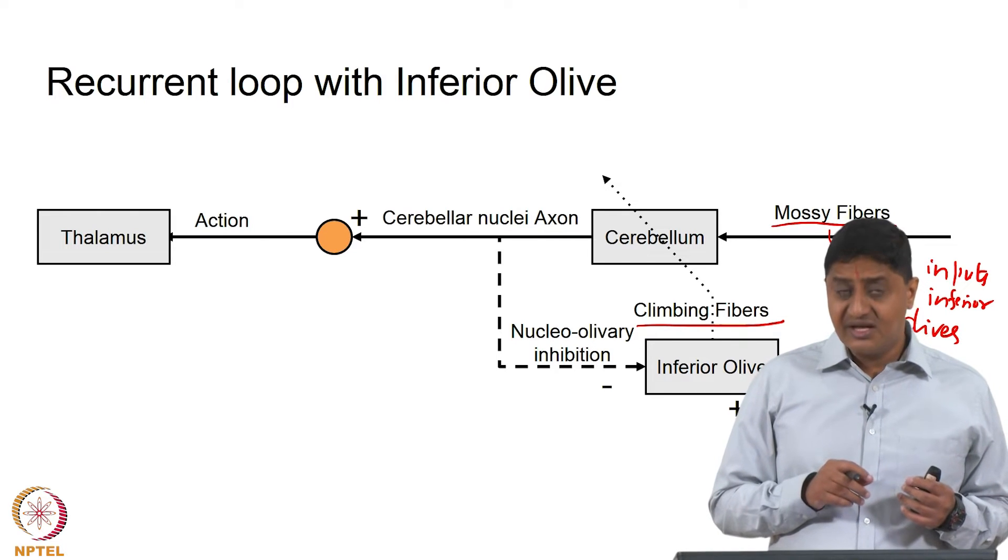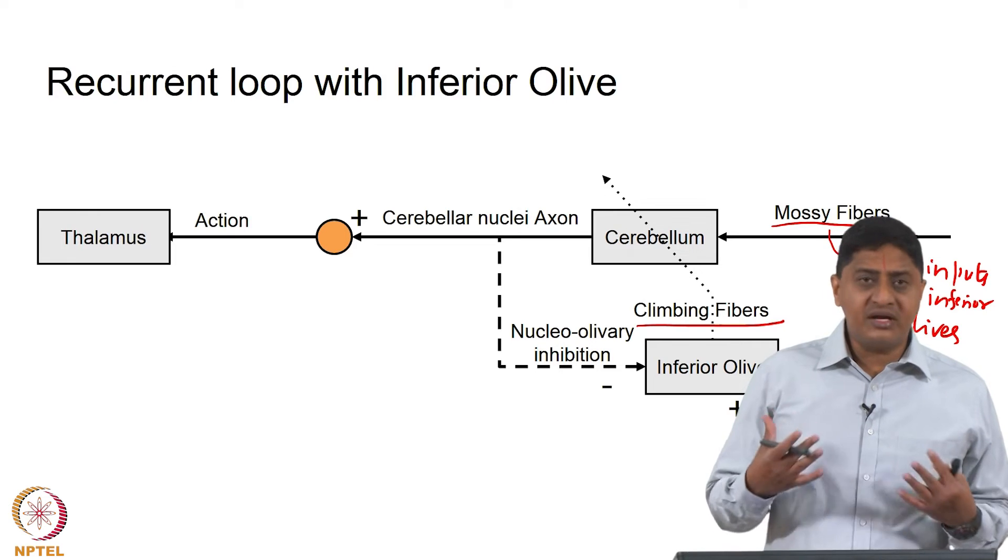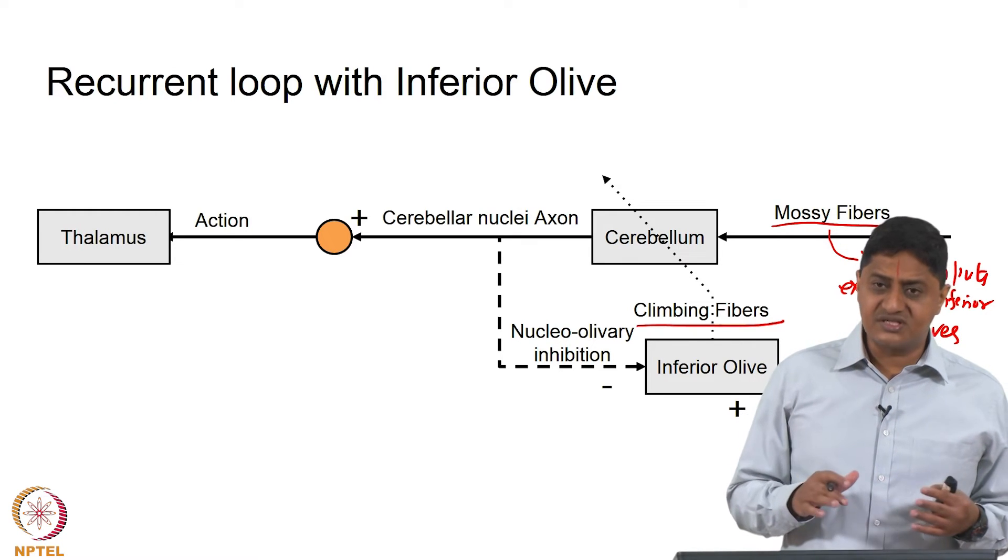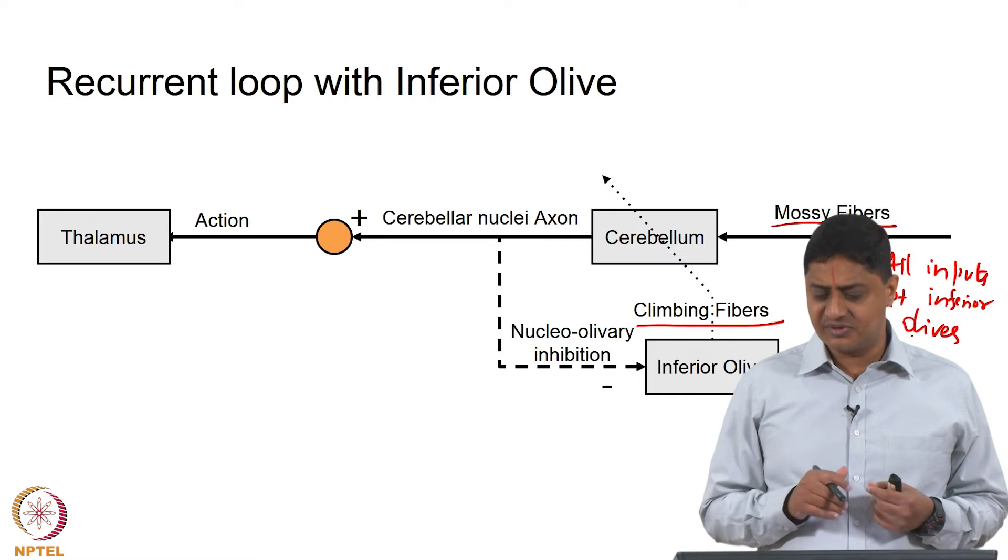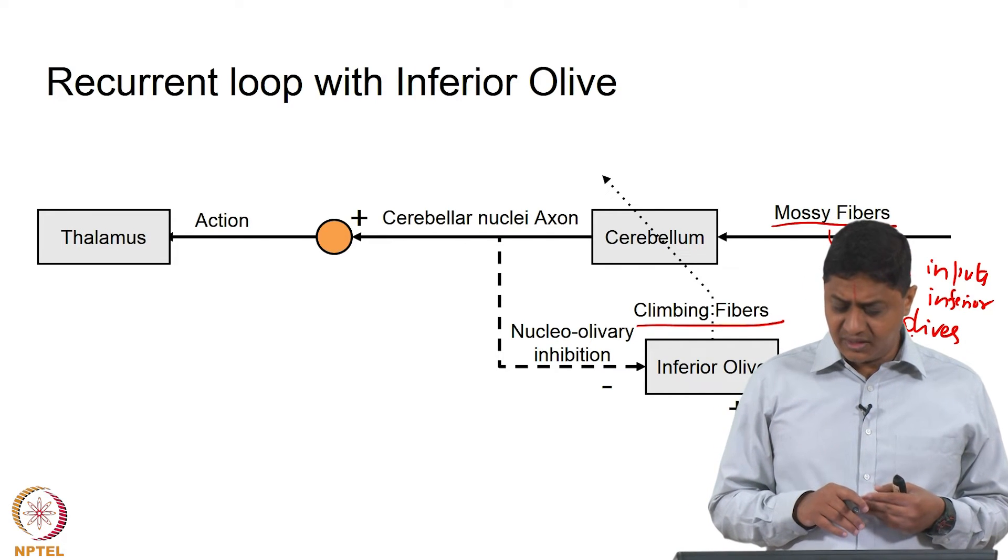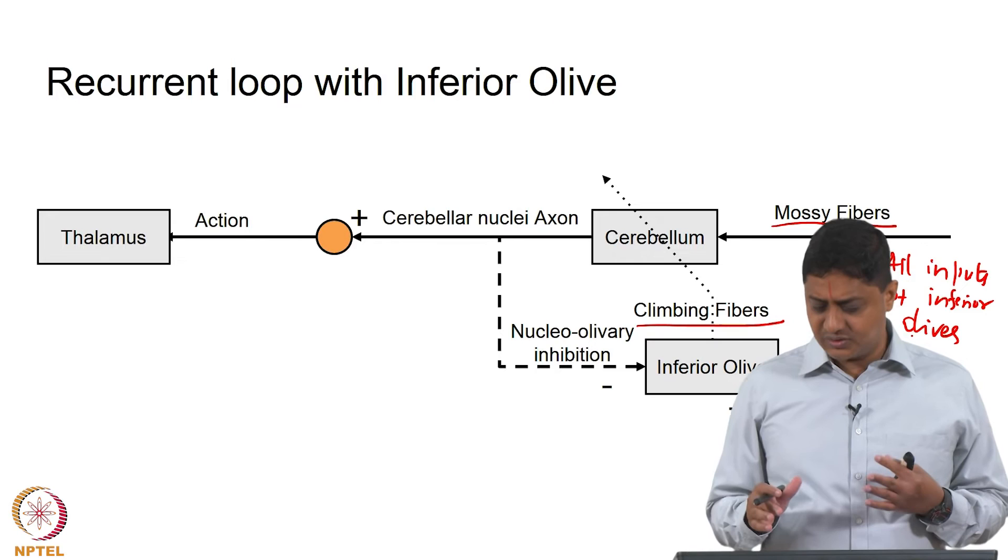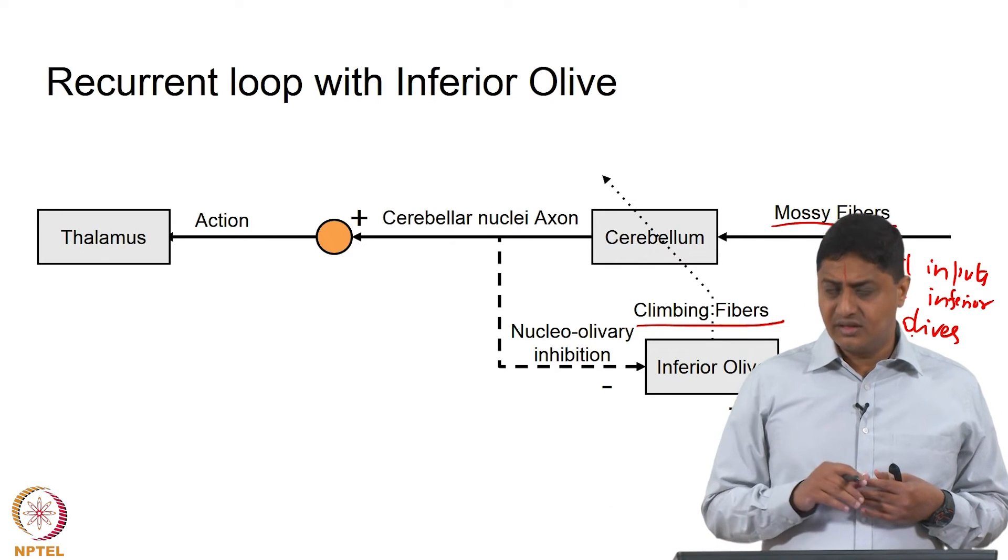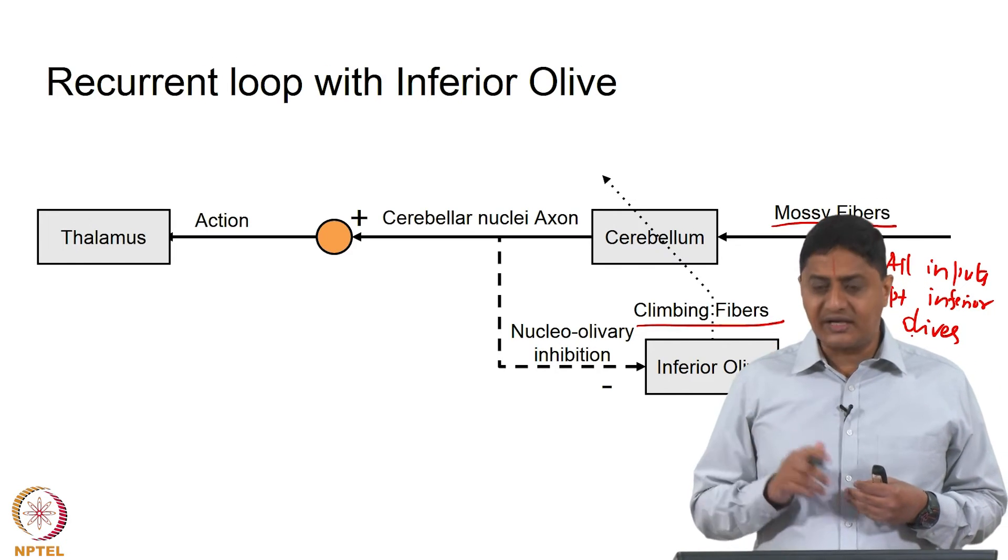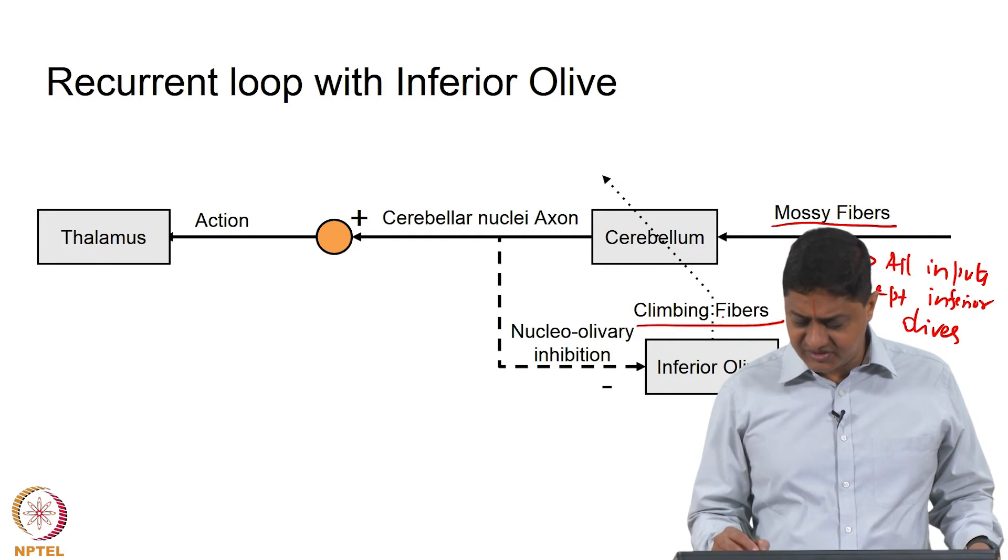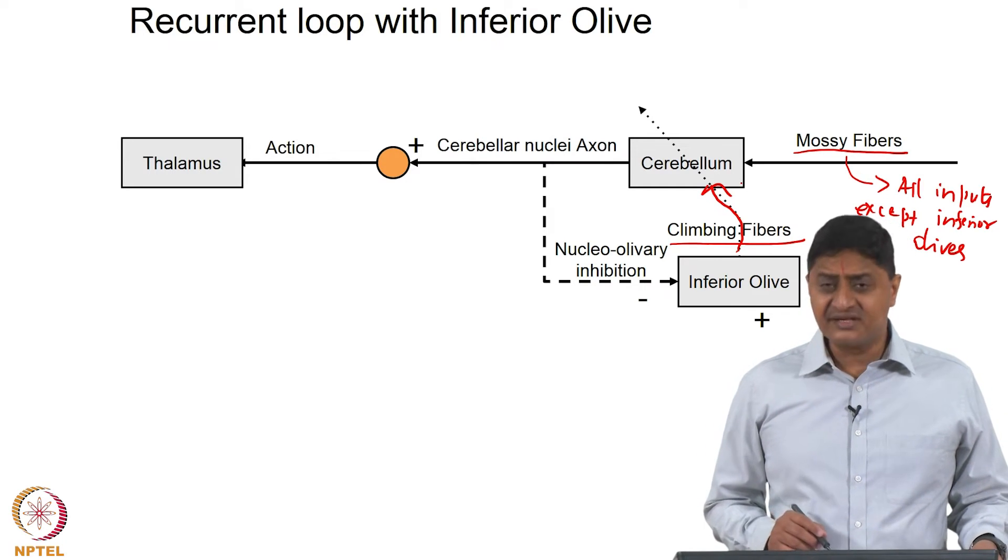Inputs that originate from inferior olive are called climbing fibers. We saw what is the special feature of these climbing fibers. Climbing fibers climb through the granular layer; they do not make synapses with the granule cells, but rather they directly synapse with the Purkinje cells, making hundreds of synapses with each Purkinje cell. One climbing cell can innervate up to 10 Purkinje cells, but a given Purkinje cell receives input from only one climbing fiber.